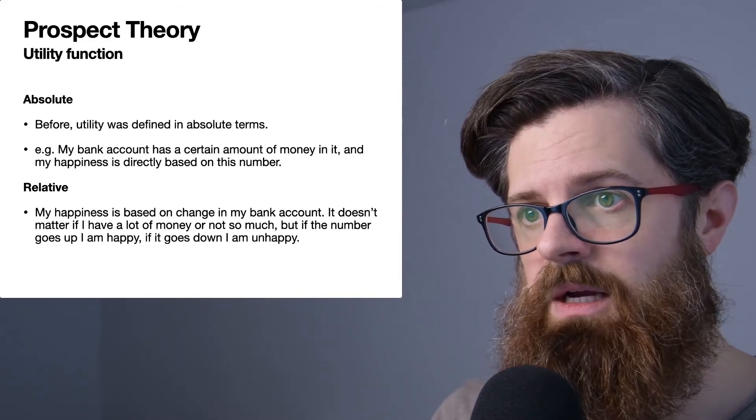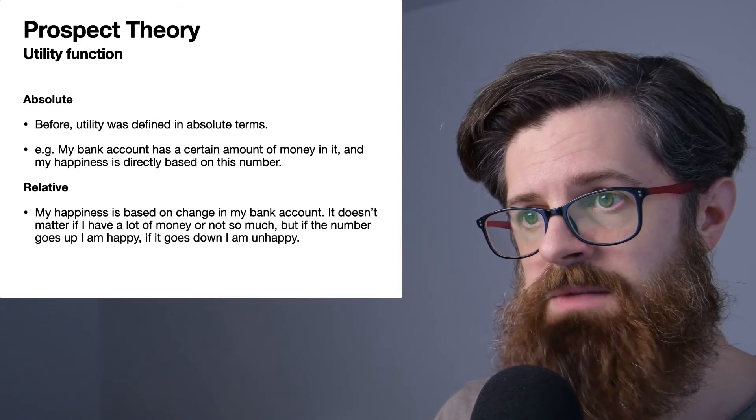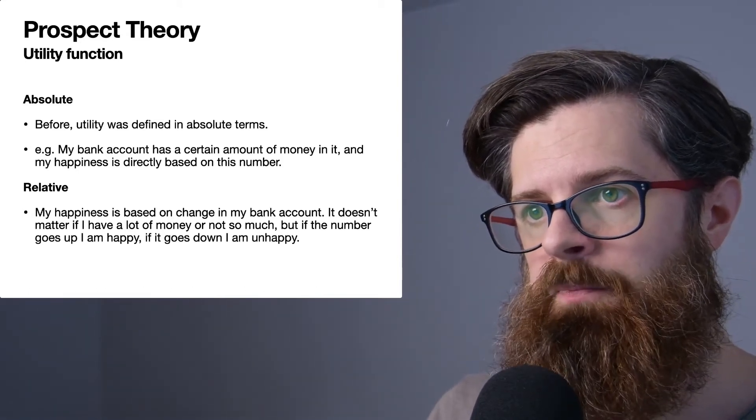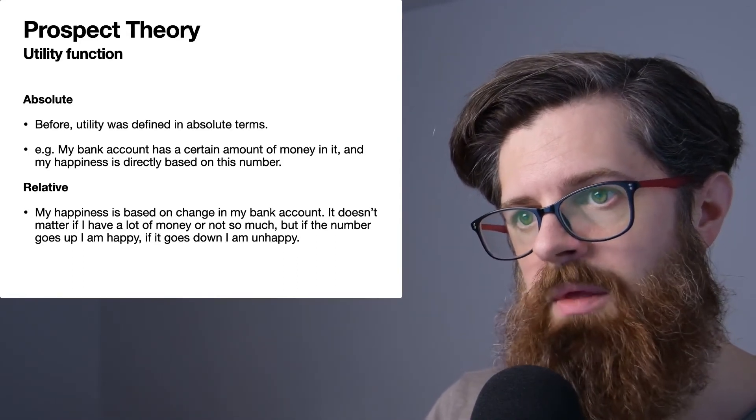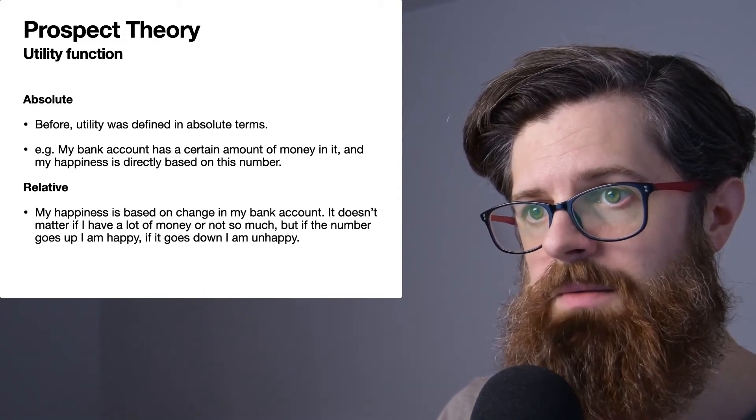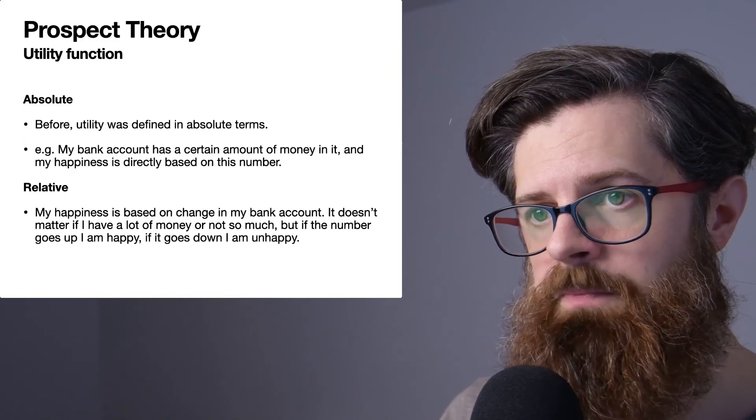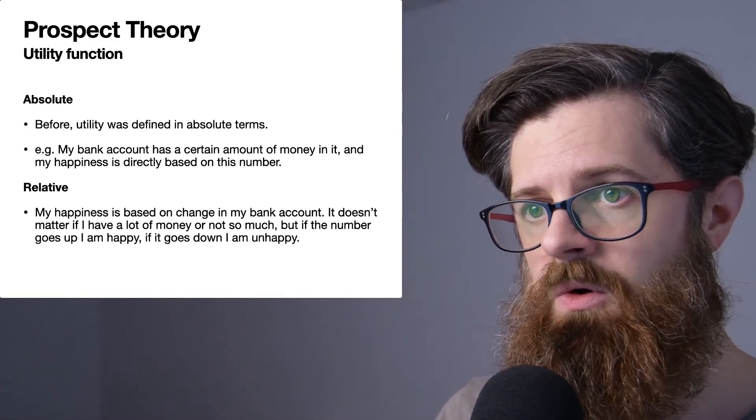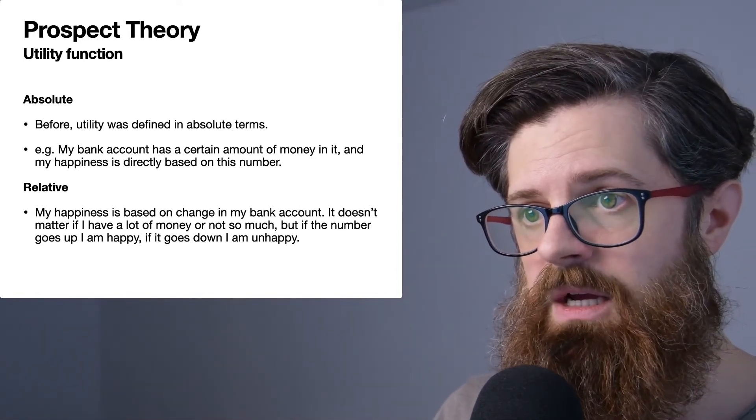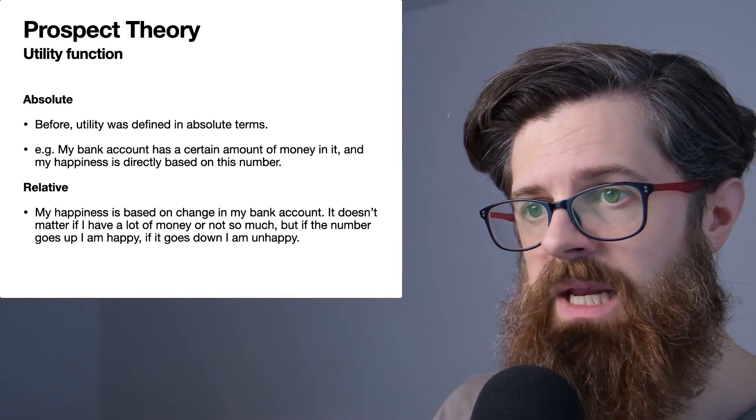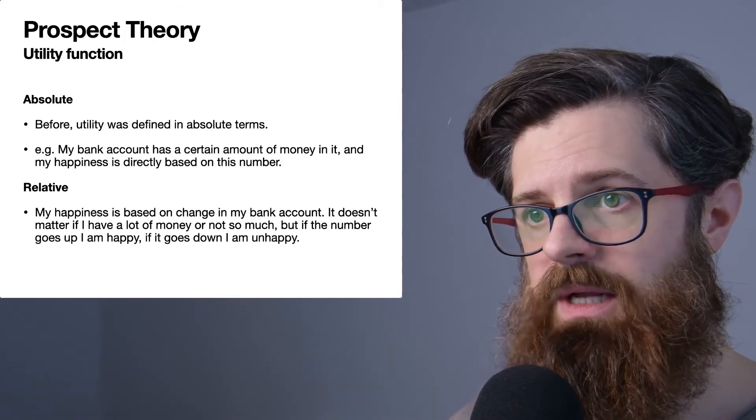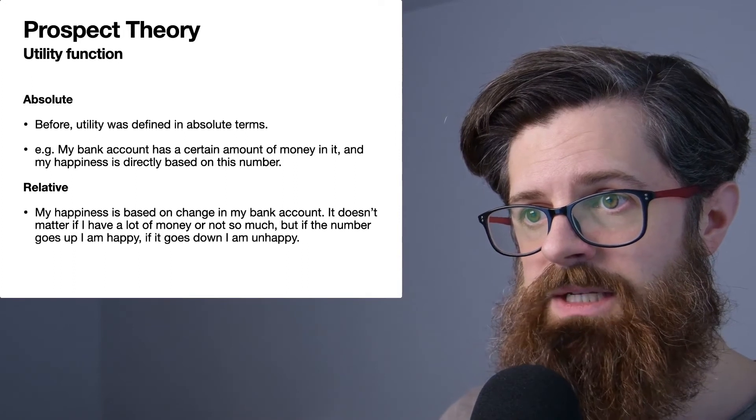However, in prospect theory, your subjective value function is now relative to the reference point that you happen to be at. Now your happiness is based upon the change in your bank account. You may have lots of money in your bank account, but according to this scheme that doesn't dictate your utility—instead it's the change. For example, if at the beginning of the month you get your wages, you might experience a high amount of utility because your bank account has increased by quite a lot.